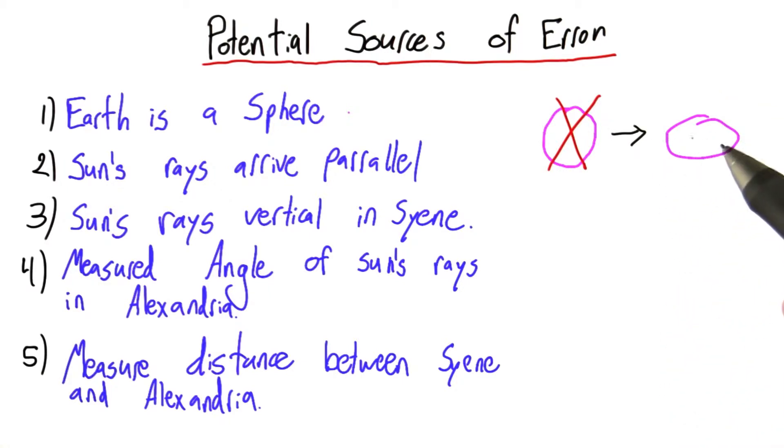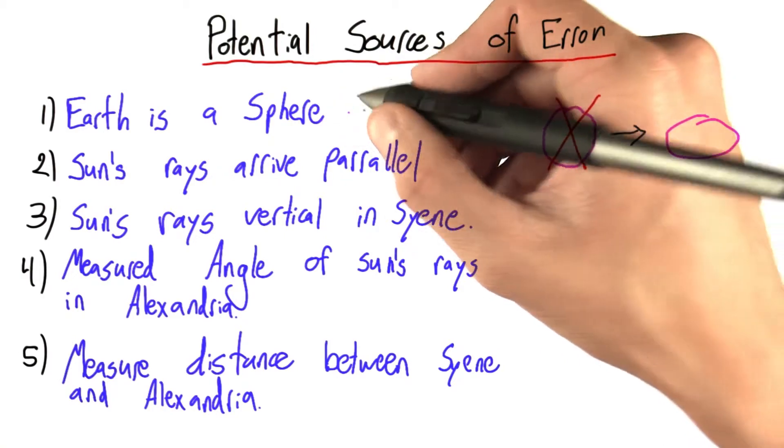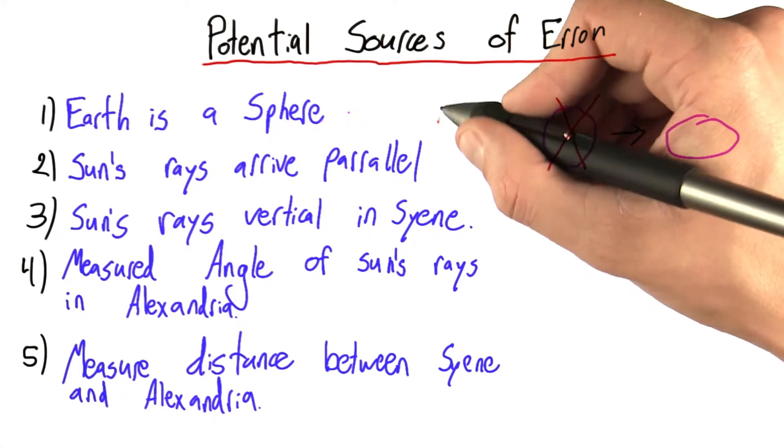It turns out that this difference is so tiny that this wouldn't really introduce any actual error into our calculation. Barely even measurable, so I'm going to call this potential source of error as negligible.